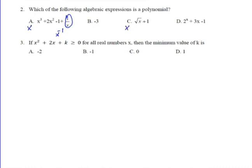C cannot be the answer because the square root of x means x is to the power of 1 over 2. So C cannot be the answer. D cannot be the answer because 2 is the power of x, which is exponential. So the answer for question number 2 will be B.